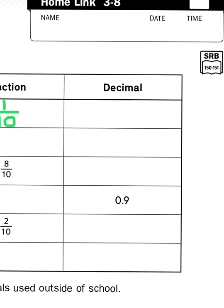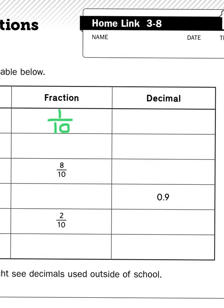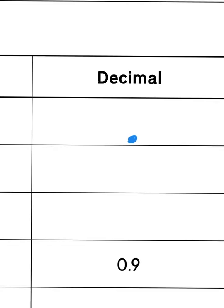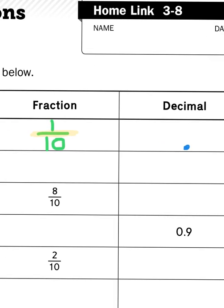Now, in decimal form, we are using our number system, and instead of that line right there that shows us the difference between parts and wholes, we use the decimal point. That little dot, or period, that decimal point is like the line in our traditional fraction, and it signifies the difference between parts and wholes.